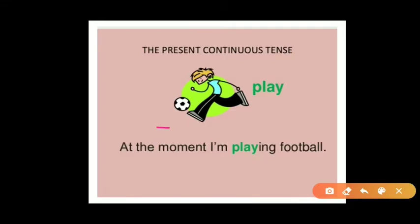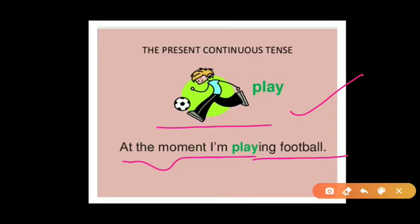Here a boy is playing. At the moment, he is saying 'I am playing football.' When someone asks him 'What are you doing?' he replies 'I am playing football at the moment.' At that particular time, he is playing football — this is an example of present continuous tense.